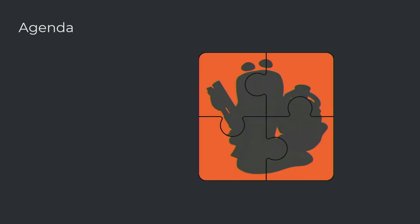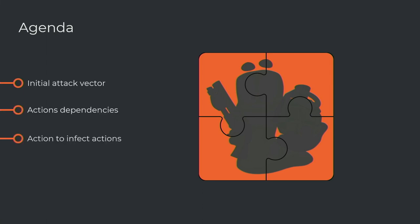Now let's talk about the worm itself. In order to understand how to build the GitHub Actions worm, we need to understand a few parts of the puzzle we'll build during this presentation: initial attack vector, action dependencies, how to infect actions, and finding attack graphs at scale. If this doesn't mean anything to you right now, you'll understand it in a few minutes. We'll go through each one, completing the puzzle, and when finished we'll be able to show a demo of the worm attacking repositories.